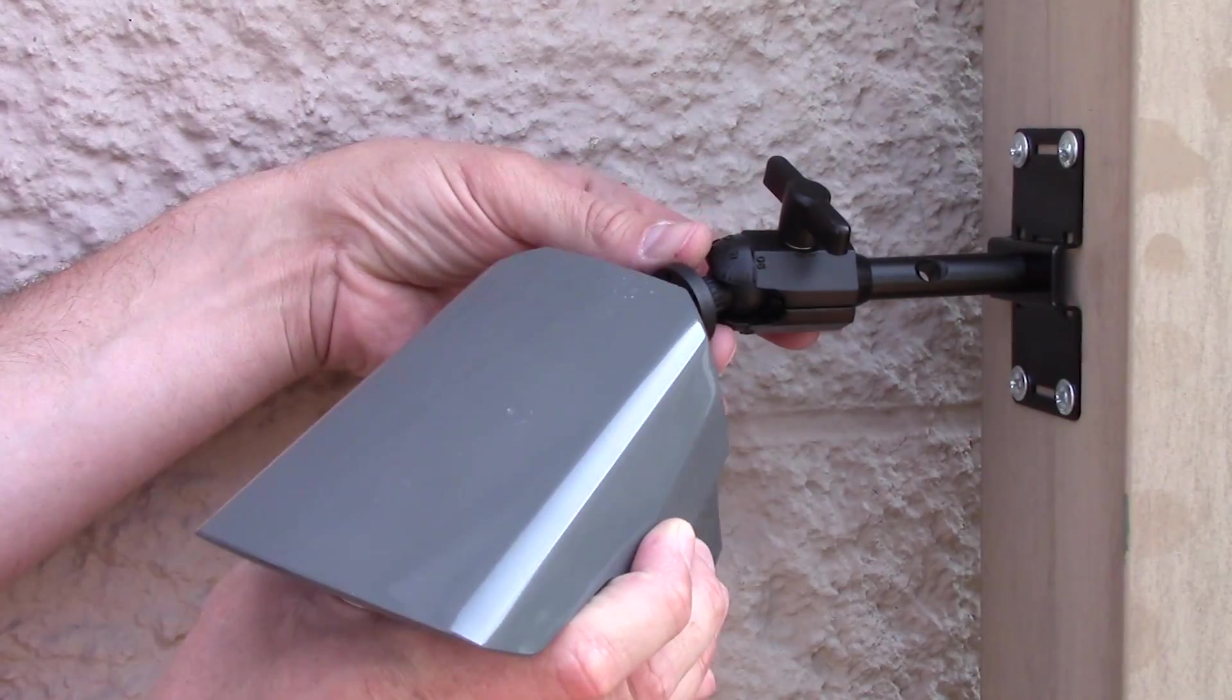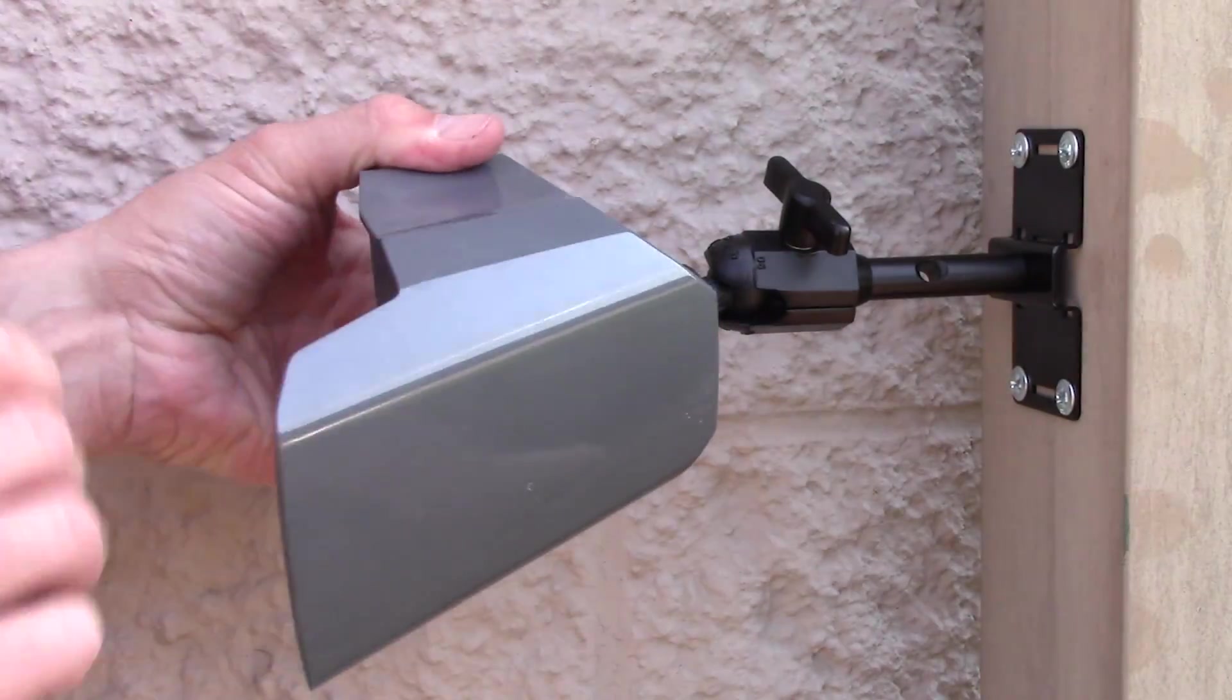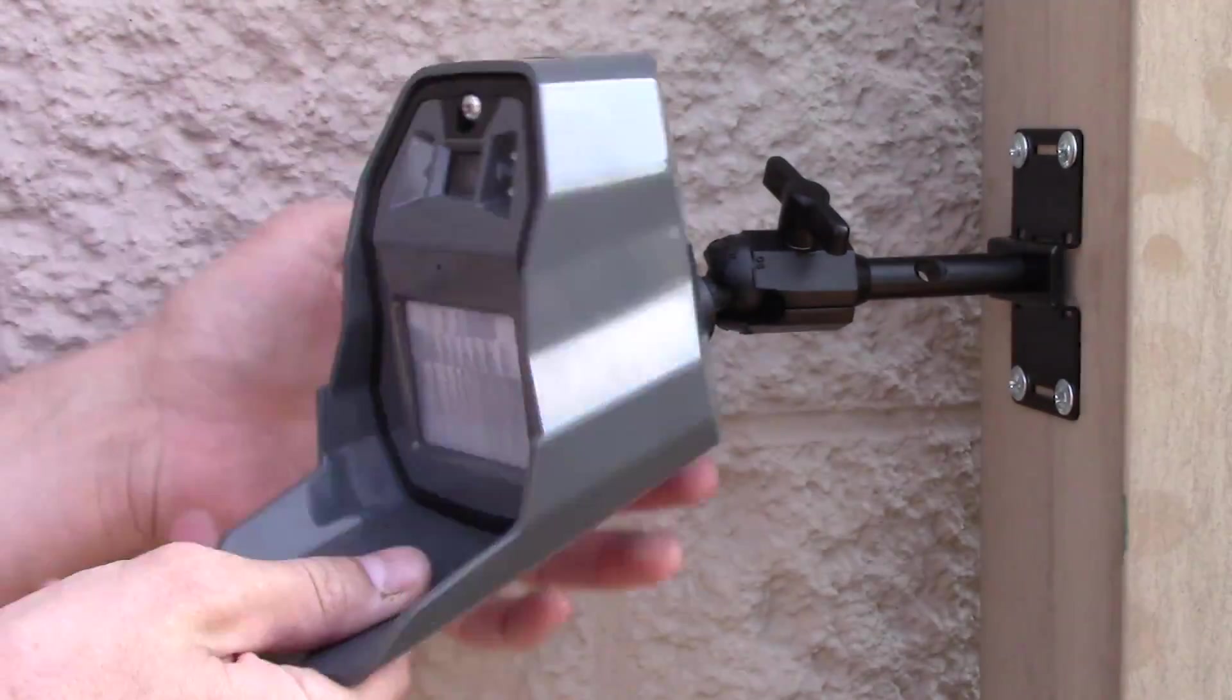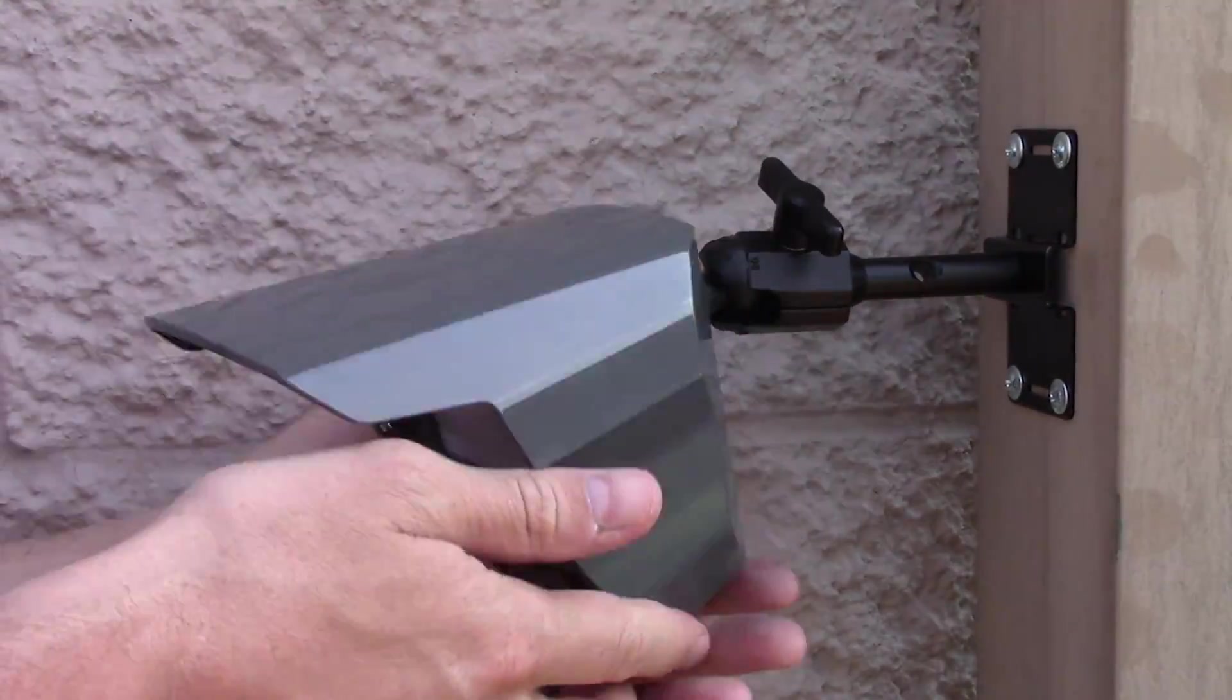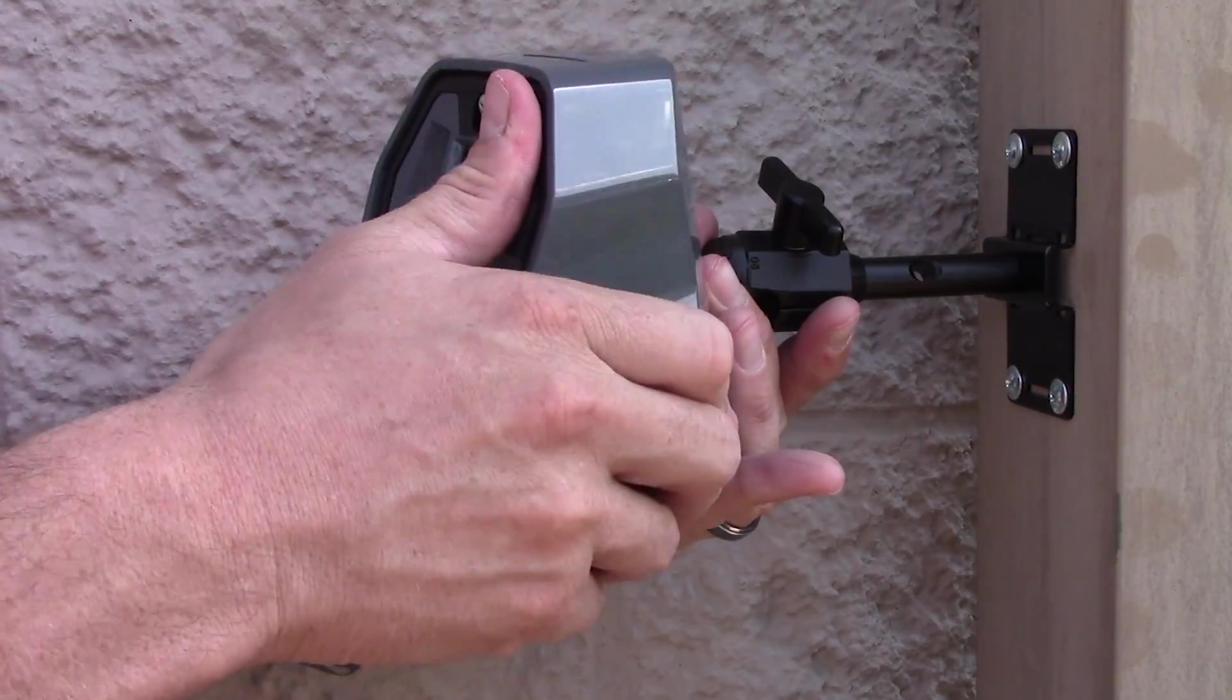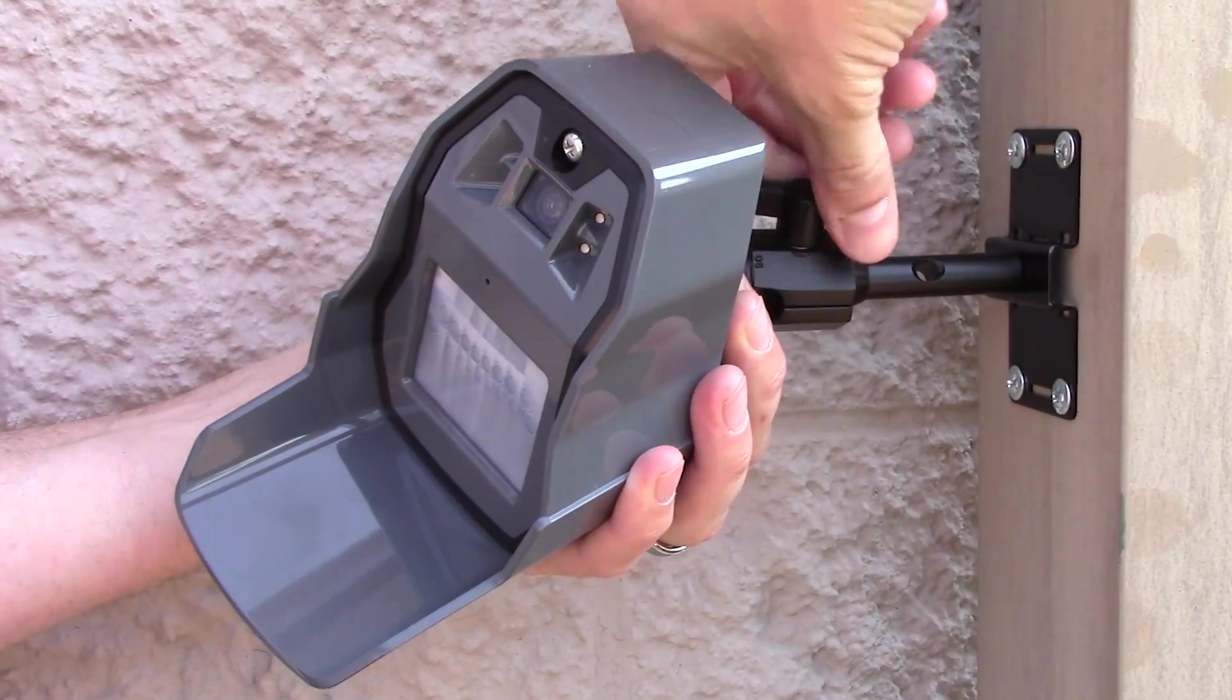Then, thread the Motion Viewer onto the mounting screw. Finally, adjust the Motion Viewer for proper alignment.